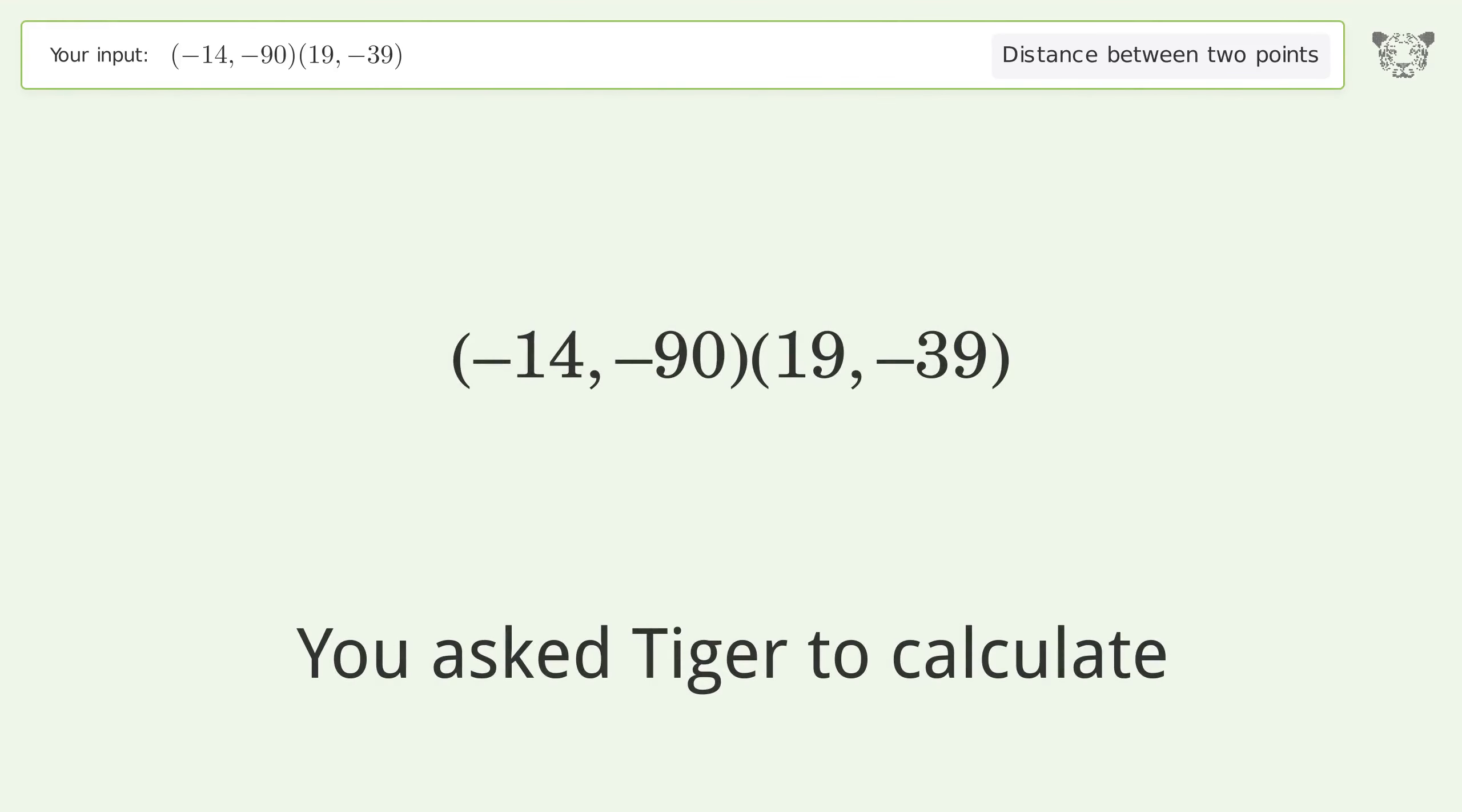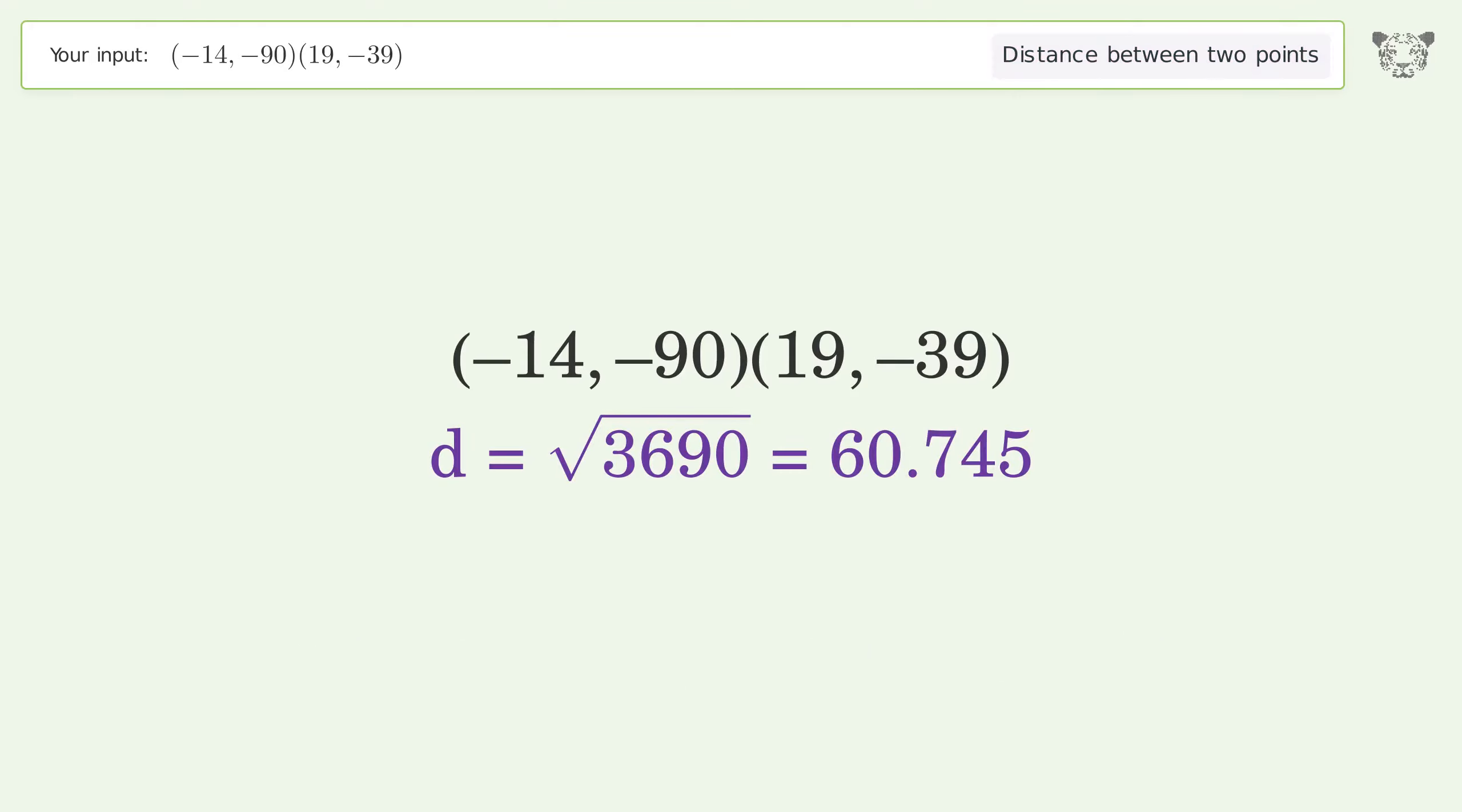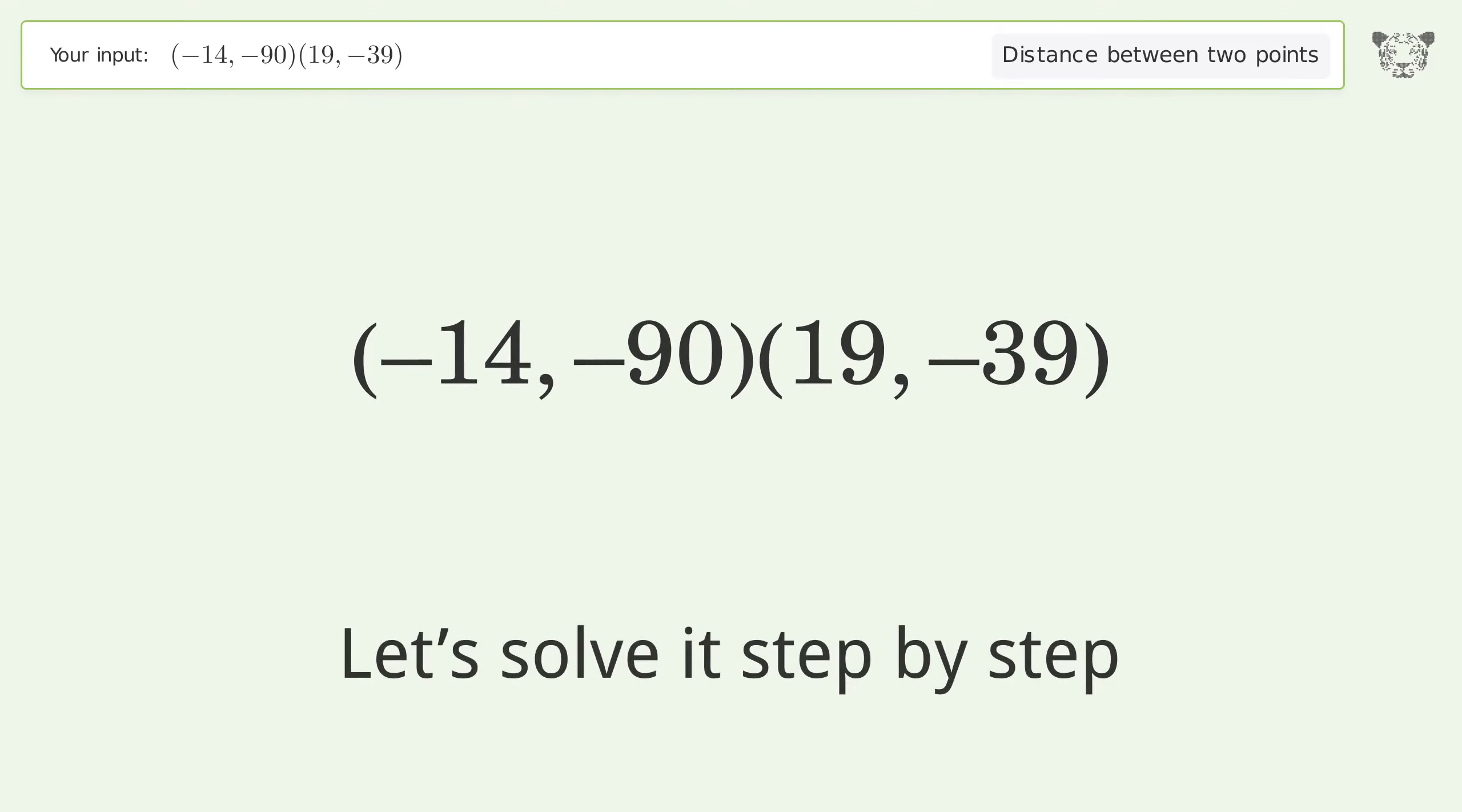You asked Tiger to calculate the distance between two points. The distance between the two points is the square root of 3690 or 60.745. Let's solve it step by step.